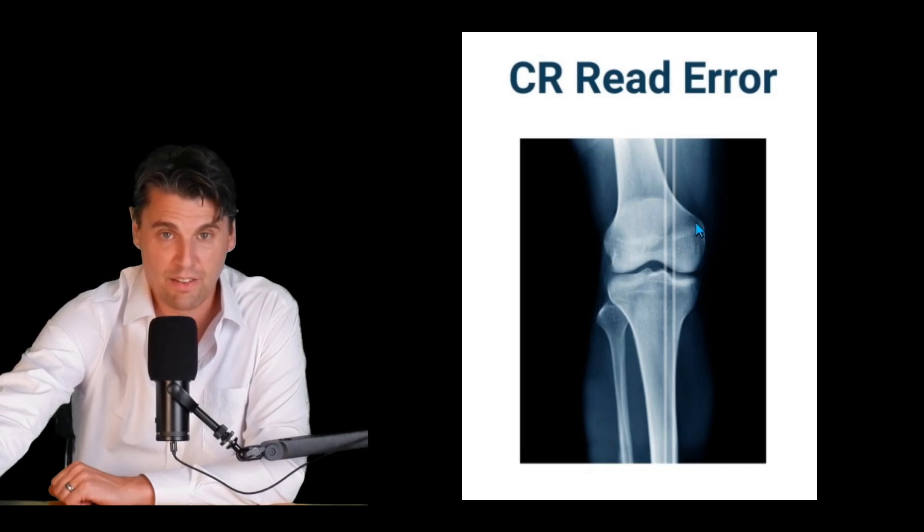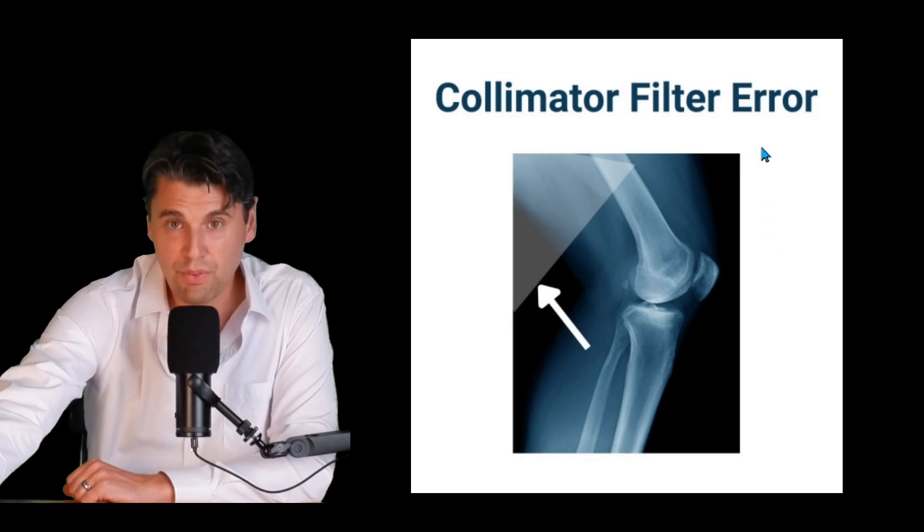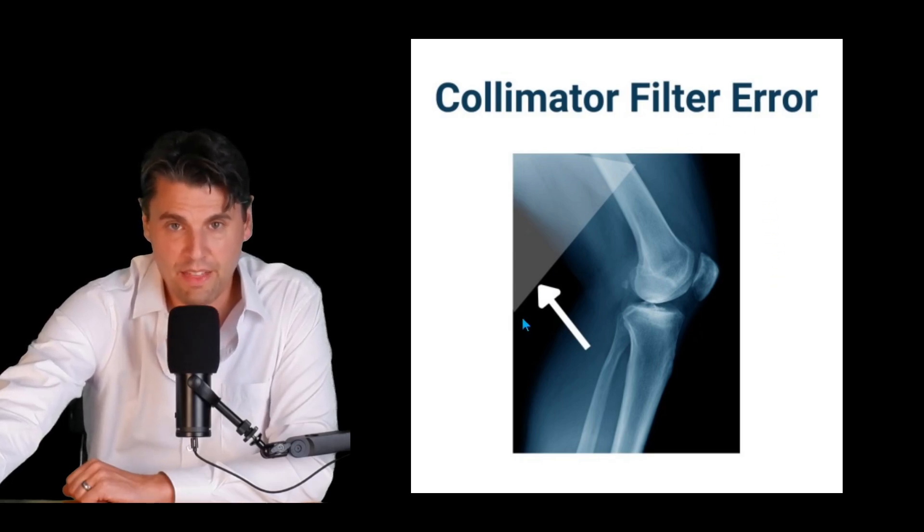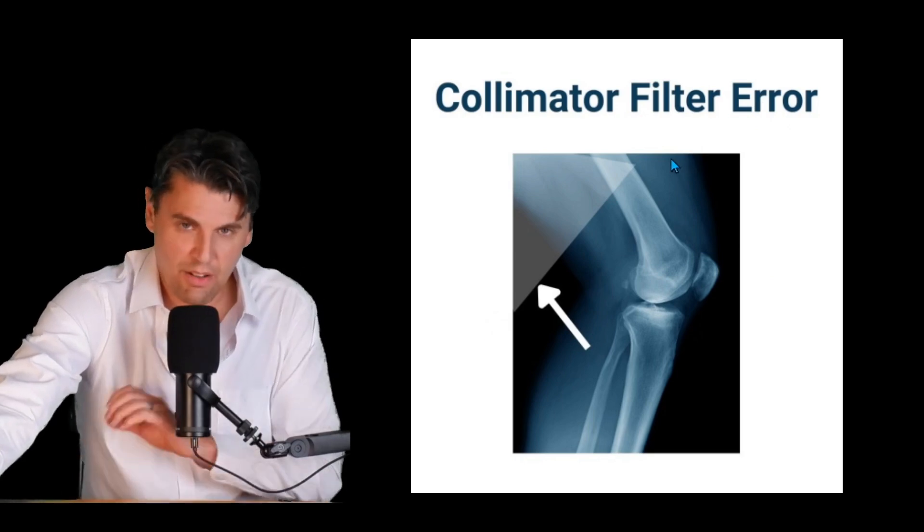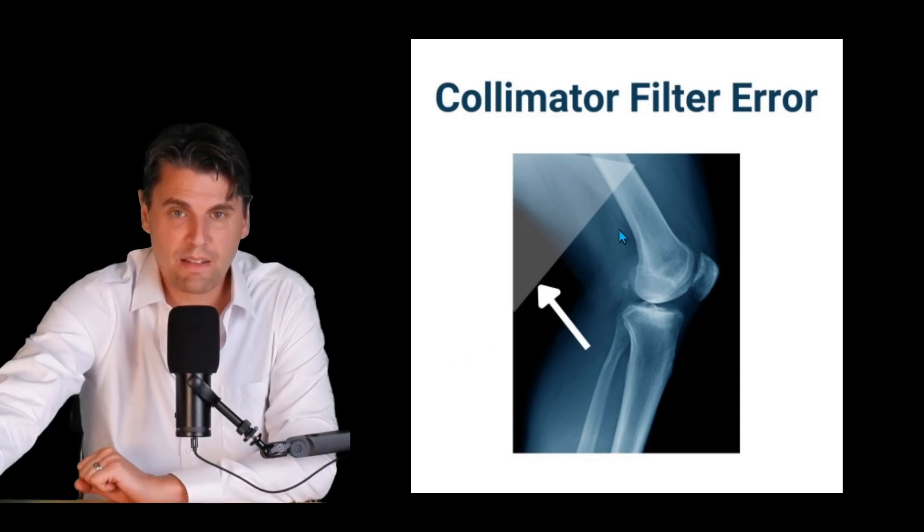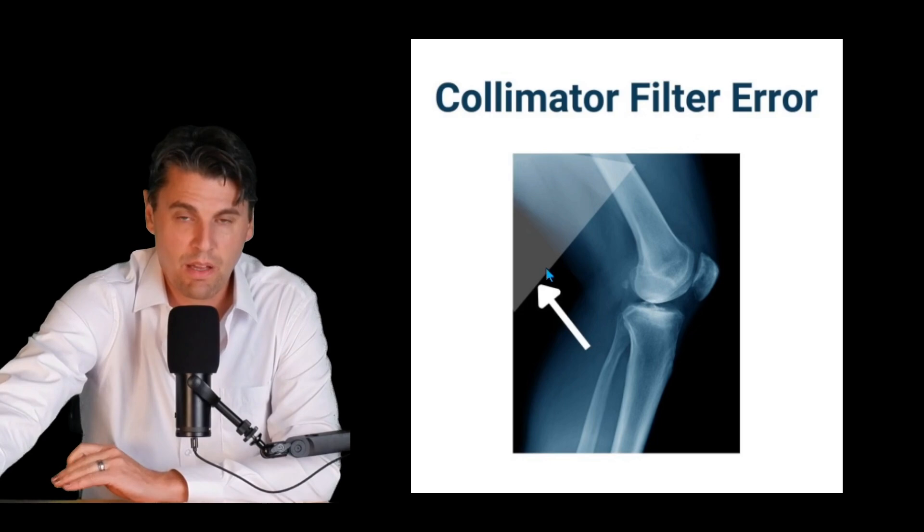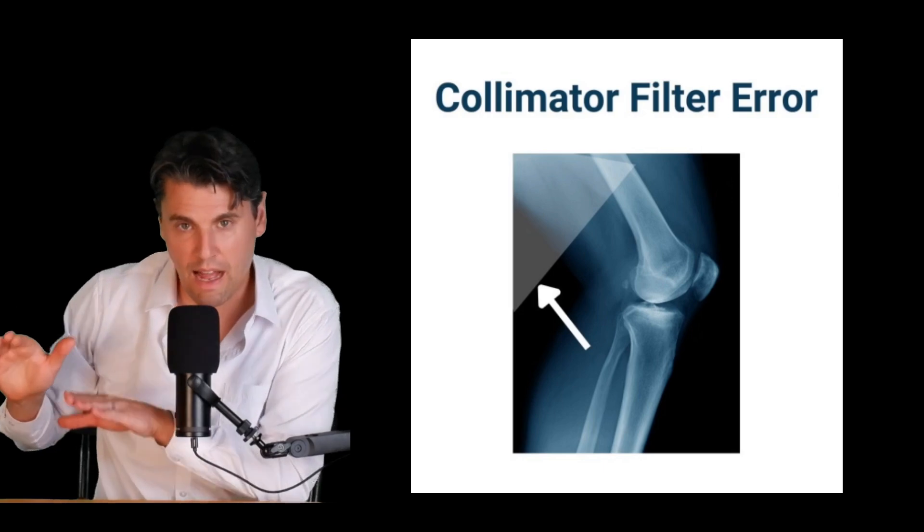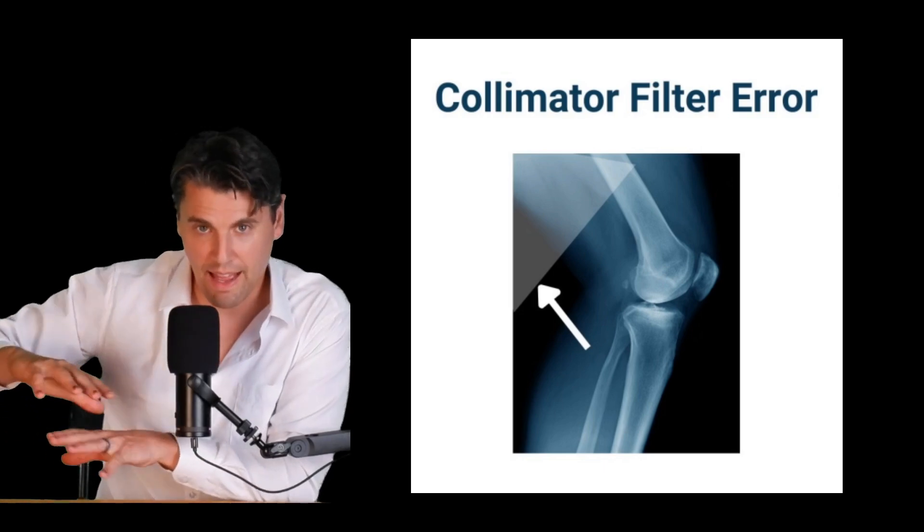If you see something like this where you have a structure either a rectangular structure or triangular structure one possibility on an x-ray system is that is actually due to part of the collimator assembly that has come loose.